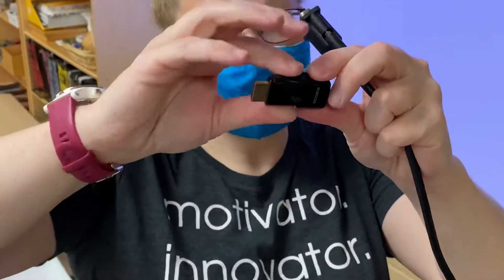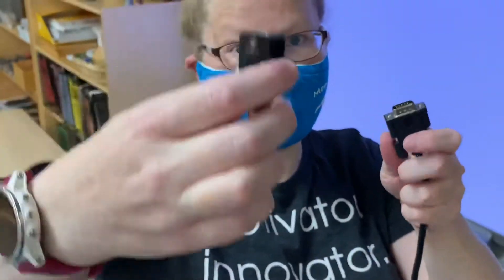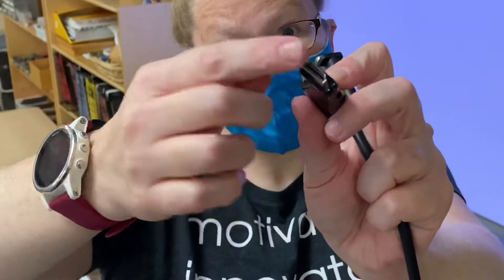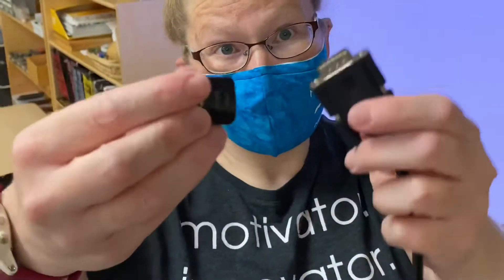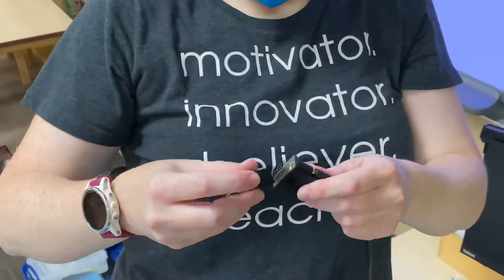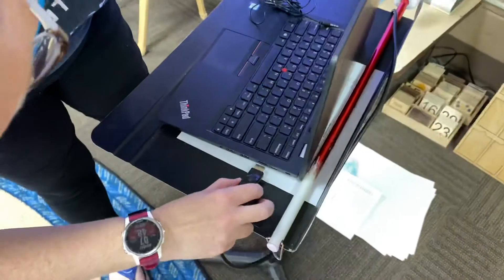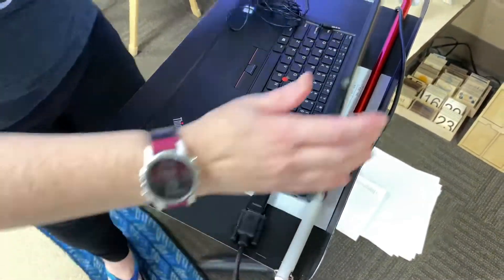My adapter does not look like the one the district's going to give you. The district's going to give you one that looks a little bit bigger, but on one end it has a VGA port, the other end has the HDMI. Connect your cable to the VGA port on that adapter and then take that adapter and plug it into the HDMI port on your computer.